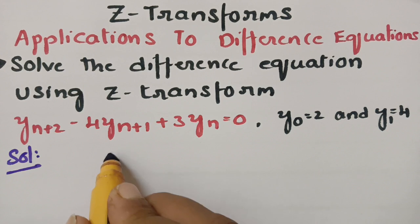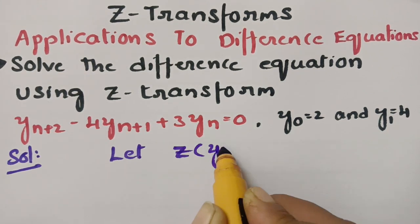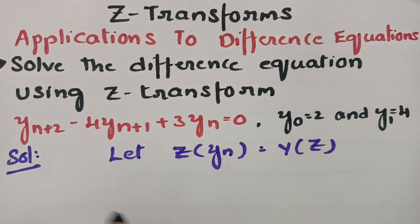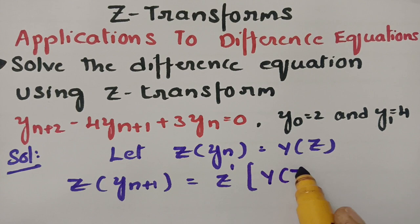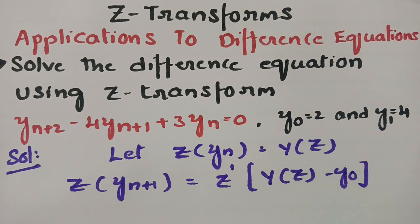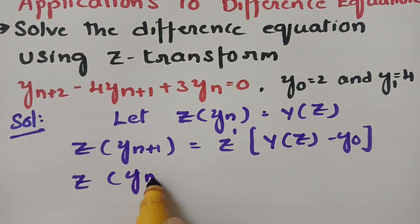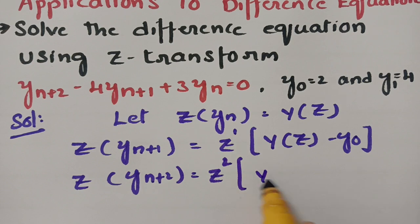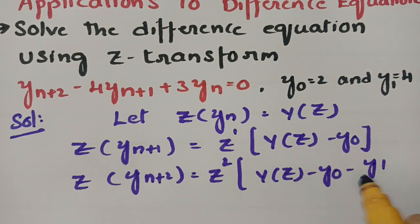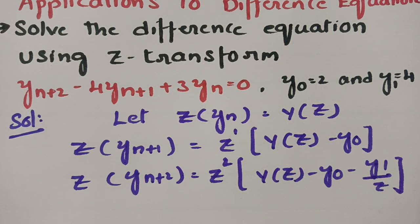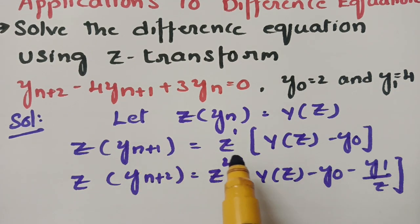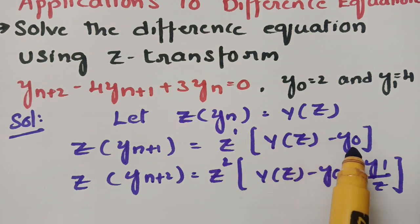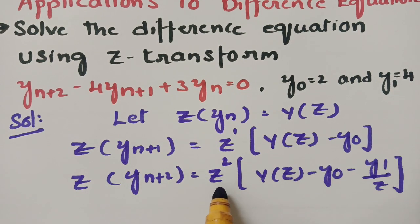In this solution, first of all, I am going to consider the Z-transform of Y(n) as capital Y(Z). Next, the Z-transform of Y(n+1) is Z to the power 1 times Y(Z) minus Y(0). And the Z-transform of Y(n+2) is equal to Z-squared times Y(Z) minus Y(0) minus Y(1) divided by Z.